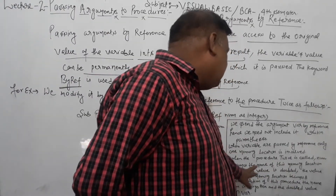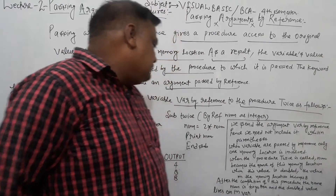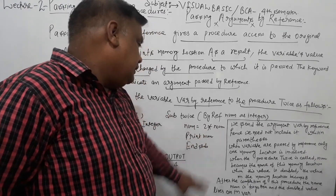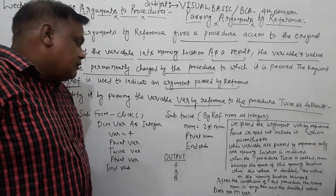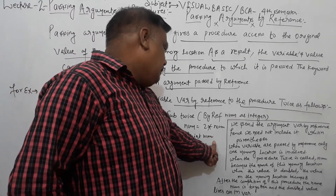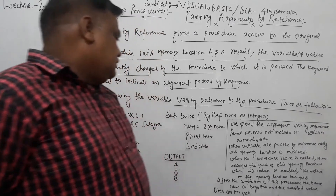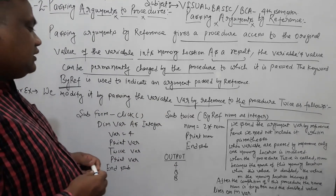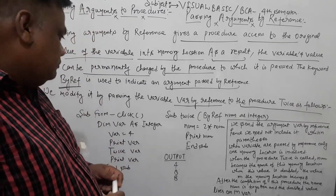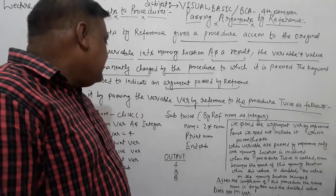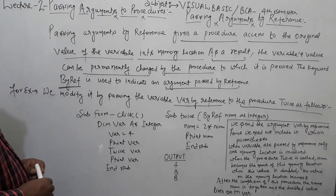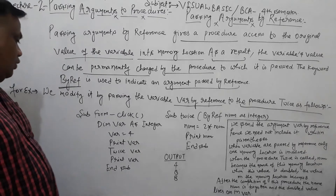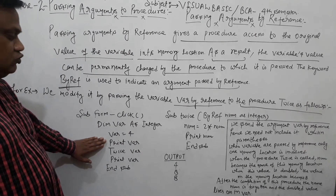Like when 'twice' is called, num becomes the name of this memory location. When this value is doubled — 4 to 8 — so print num gives 8. When this memory is doubled, the value in the memory location becomes 8. After the completion of this procedure, the name num is forgotten, and the doubled value lives on in 'where'.